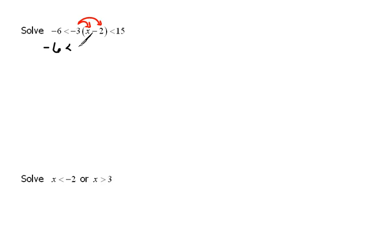So we'll have -6 is less than -3x, and then -3 times -2 would be a positive 6, less than 15.